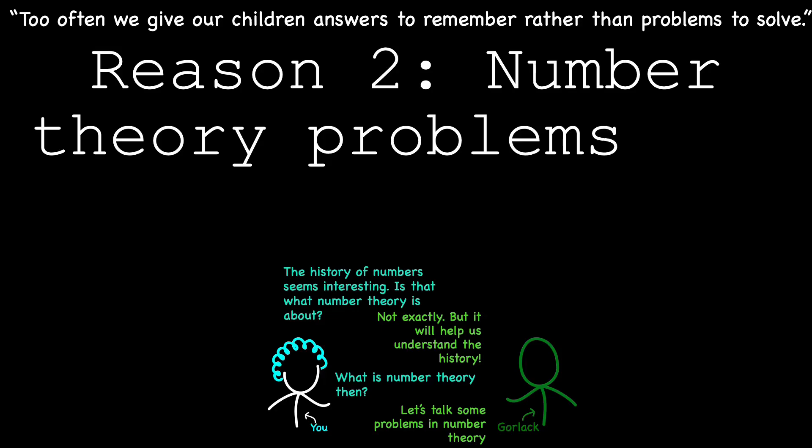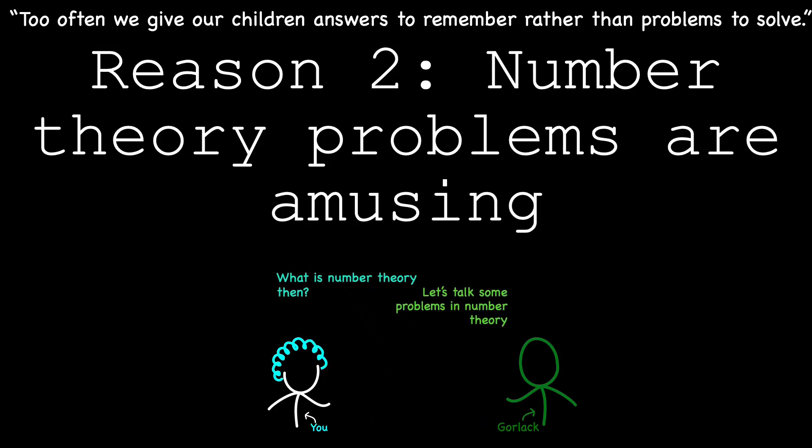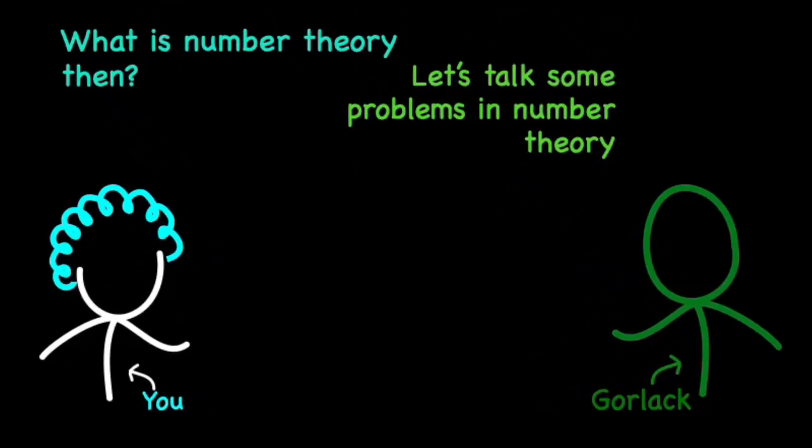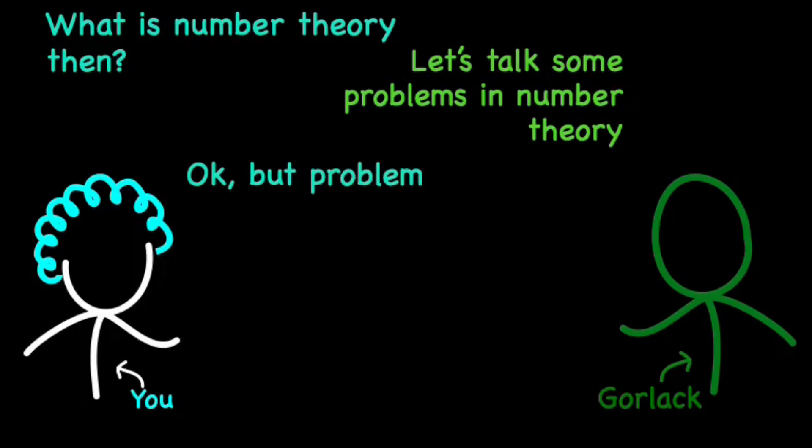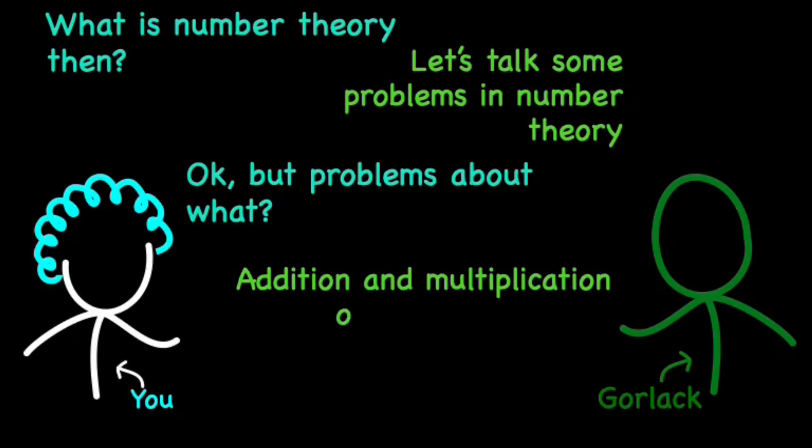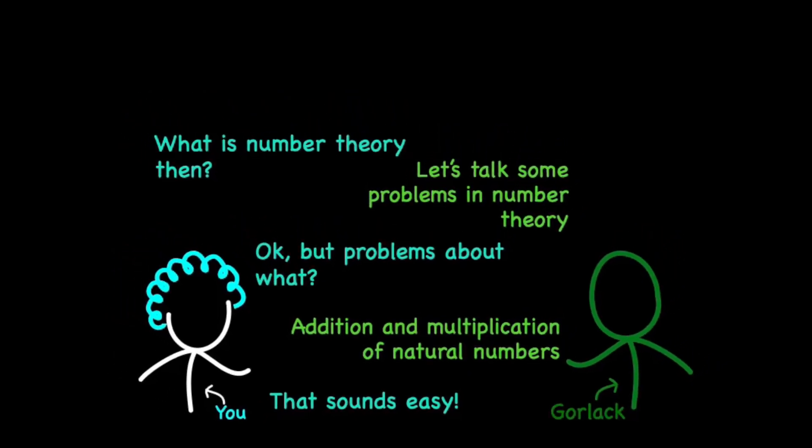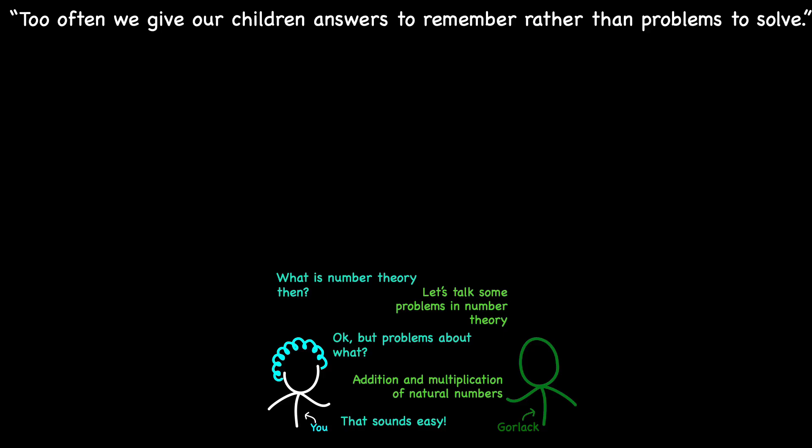Reason 2: Number theory problems are amusing. We may not live to see the future of mathematics unfold, but even today there is so much about numbers we still don't understand. Take addition and multiplication. Most adults feel like they've mastered these basic operations. But dig a little deeper into the natural numbers and you'll find that even the simplest number systems can be far more challenging than they seem.